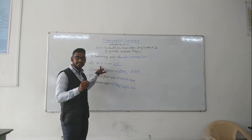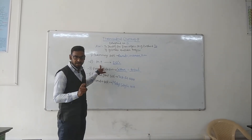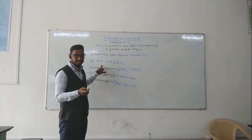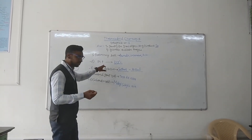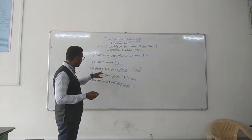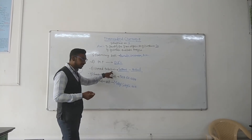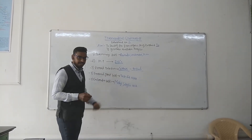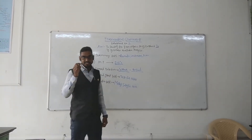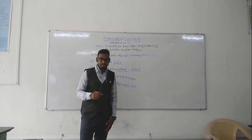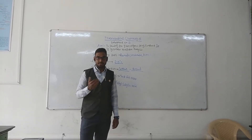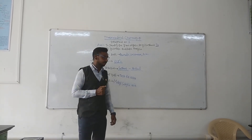For liquids, we determine the boiling point; for solids, the melting point — these are part of the physical constants. Then comes element detection: the test for nitrogen, the test for sulfur, and the test for halogens.